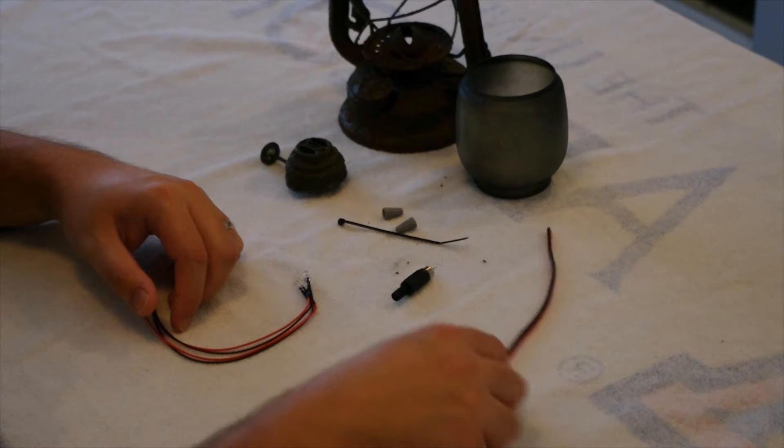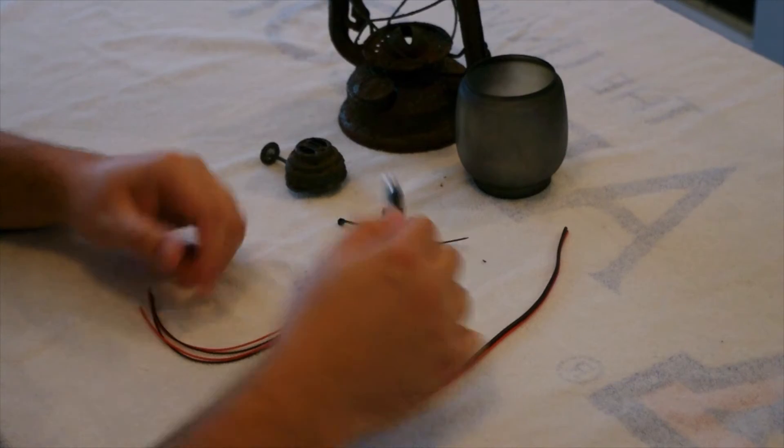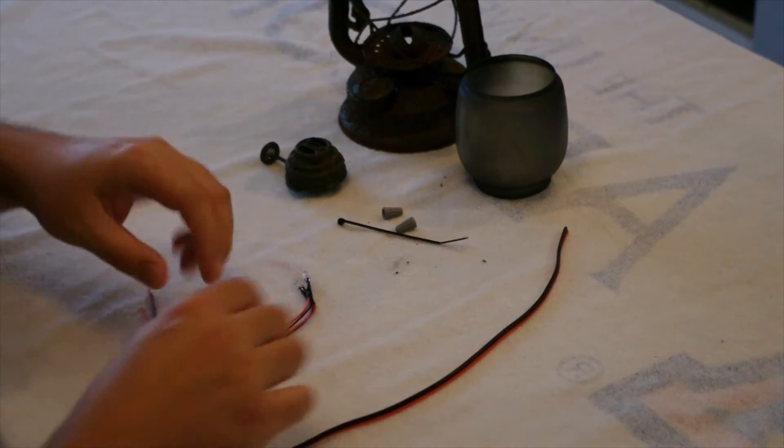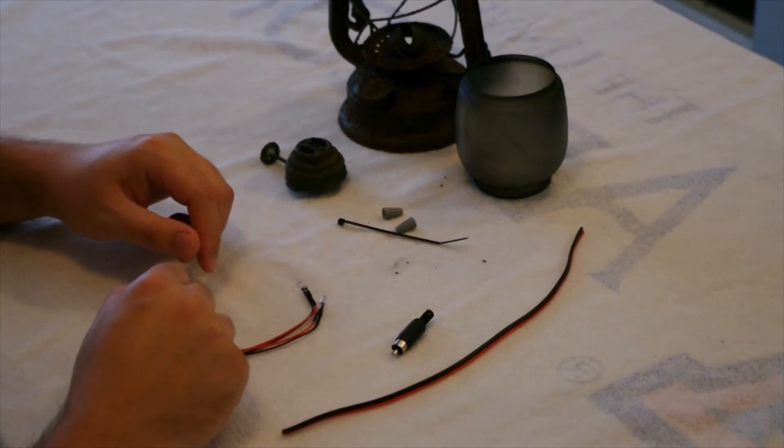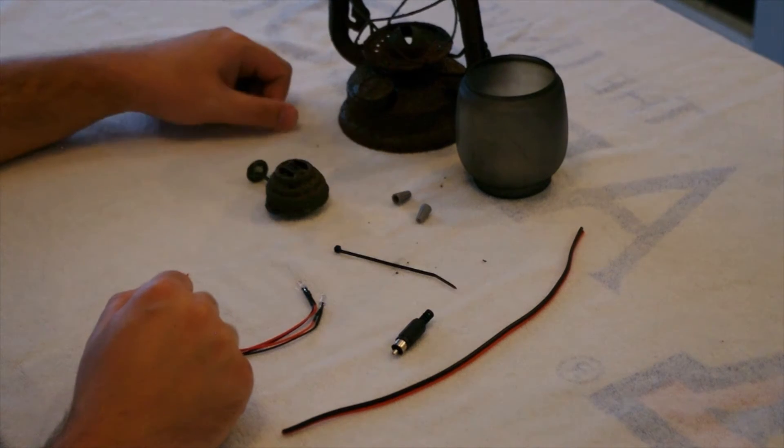I've got some wire here. On the end of that, I'm using RCA jacks for my power supply. So I've got a jack that will go on there. And I've got a couple of wire nuts, a zip tie, and that's pretty much it. So let's put it together.